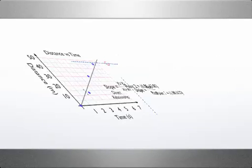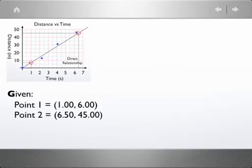Now that I have my two sets of ordered pairs, I'm going to begin to calculate the slope. And the way we calculate slope and we make any calculations in this class will be known as using the GUESS method. The first step is to write down what we know, the given. Point 1 had the ordered pairs of 1, 6, and point 2 had 6.5 comma 45. Our next step then is to put down our unknown. Our unknown here that we're trying to find is our slope.